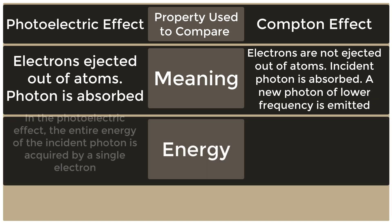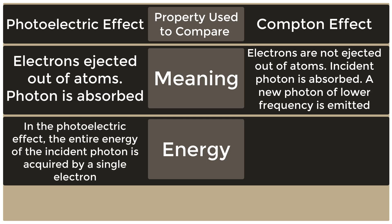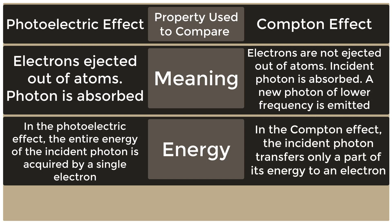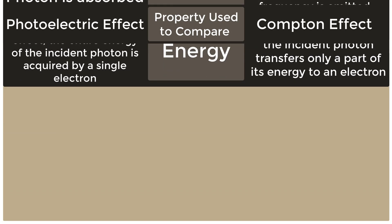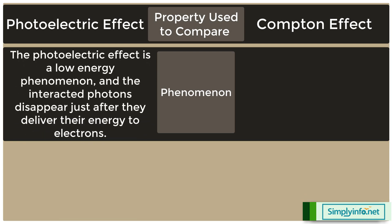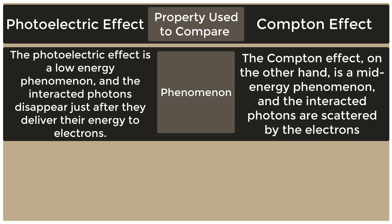Regarding energy: in the photoelectric effect, the entire energy of the incident photon is acquired by a single electron. In the Compton effect, the incident photon transfers only a part of its energy to an electron. The photoelectric effect is a low-energy phenomenon, and the interacted photons disappear after delivering their energy to electrons. The Compton effect, on the other hand, is a mid-energy phenomenon, and the interacted photons are scattered by the electrons.